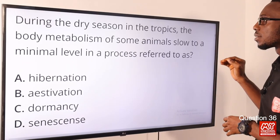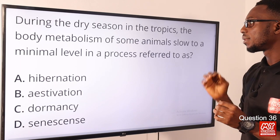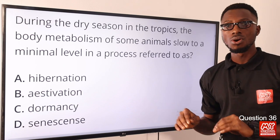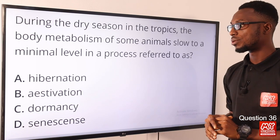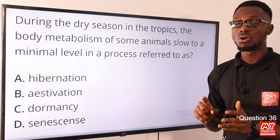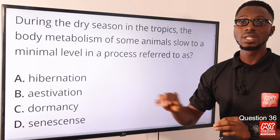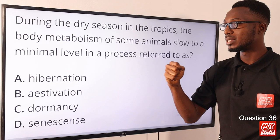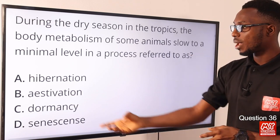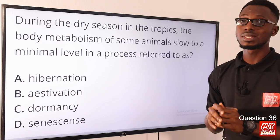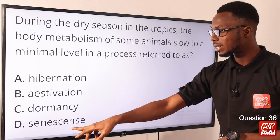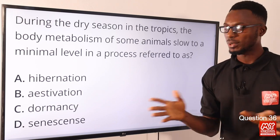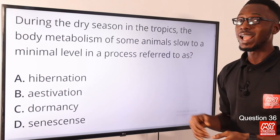Question 36: During the dry season in the tropics, the body metabolism of some animals slows to a minimum level in a process referred to as estivation. This occurs during long periods of heat or drought and can be noticed in lungfish, crocodiles, and snails. Hibernation occurs during a period of low temperature such as winter and is seen in bears and bats. Dormancy is associated with seeds of plants. Senescence refers to deterioration in condition due to aging. The correct option is option B for estivation.